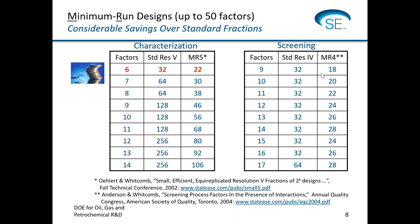Last but not least on two-level designs: we have these specialized minimum run designs. As you get to six or more factors, your standard high-resolution designs can be bettered by the minimum run, though with a price of lower power and partial aliasing of effects. The standard type of design is always better — more powerful with more regular aliasing. But one client had 11 factors and still wanted high resolution, so they did the 11-factor minimum run resolution five. Another option is to go to lower resolution and just screen the main effects; minimum run designs exist for those too, though they'll only give main effects while interactions remain aliased.